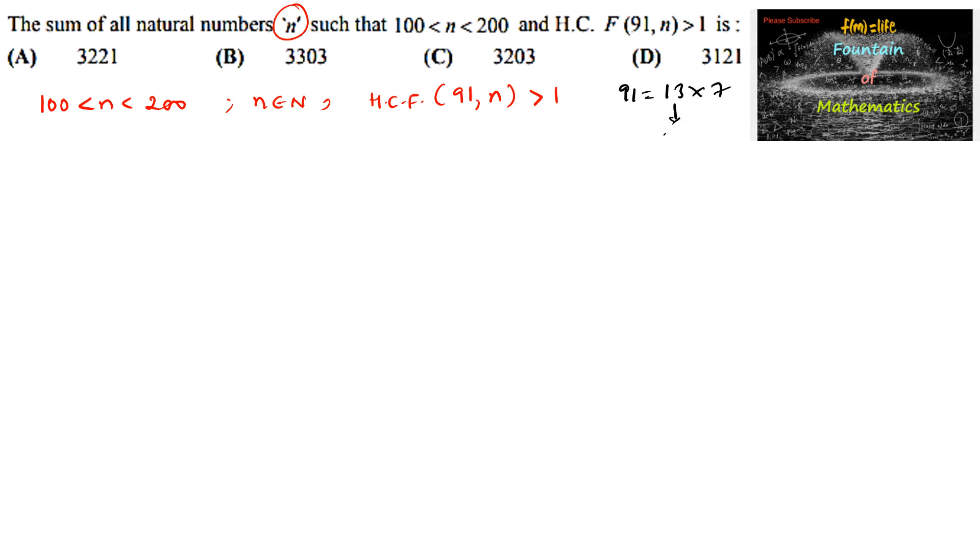So 13 is a prime number and 7 is also a prime number. To get the HCF of 91 and n greater than 1, n must be a multiple of 13 or 7.